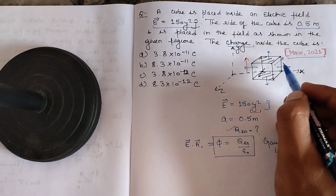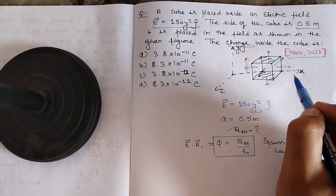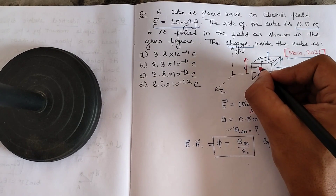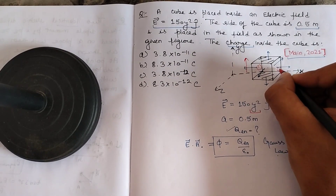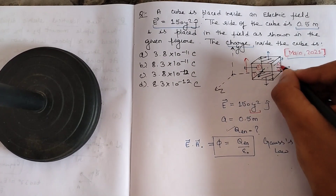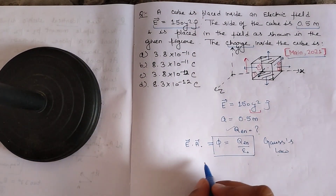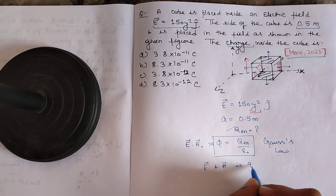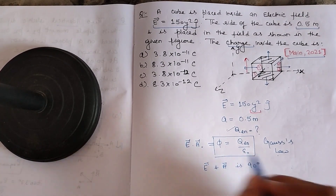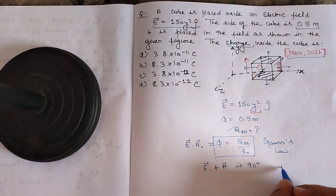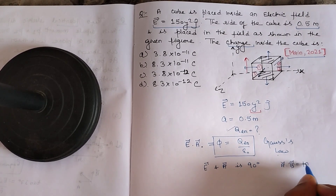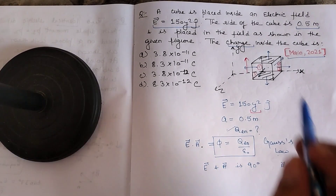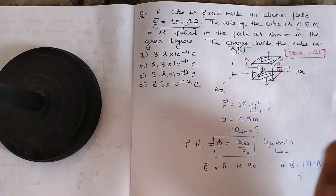When we take the dot product for all six faces, we see that for this face, this face, the frontal face, and the backward face — for all these four faces — the angle between the electric field and the area vector is 90 degrees. We know that A⃗·B⃗ = |A||B|cosθ, and cos90° = 0, meaning for all these four surfaces the electric flux is zero.